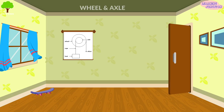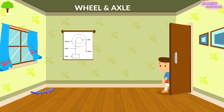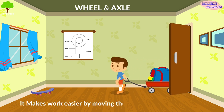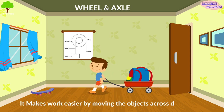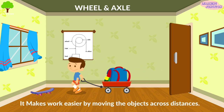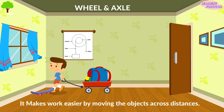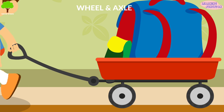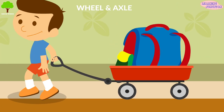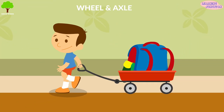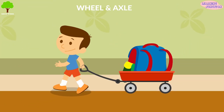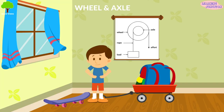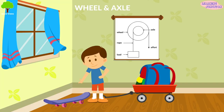Wheel and axle. It makes work easier by moving objects across distances. The wheel turns with the axle, causing movement. An example is your skateboard.